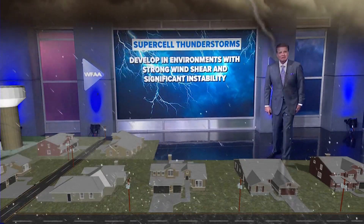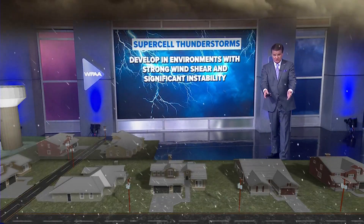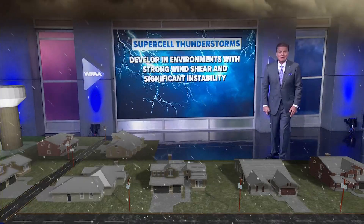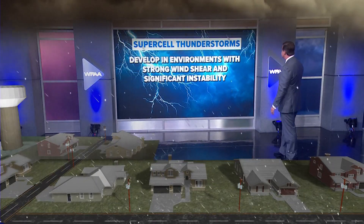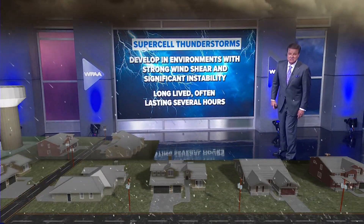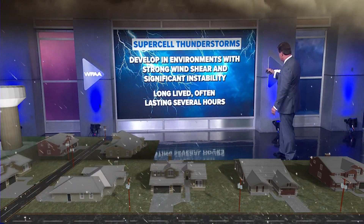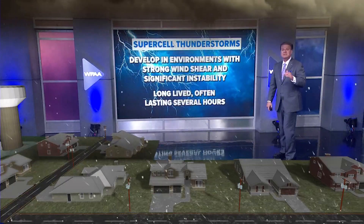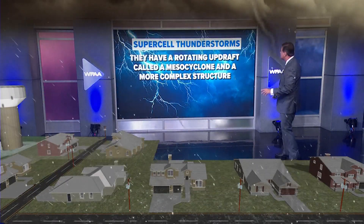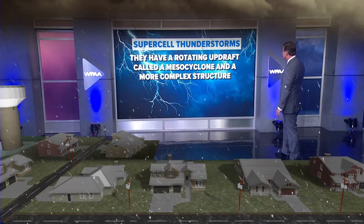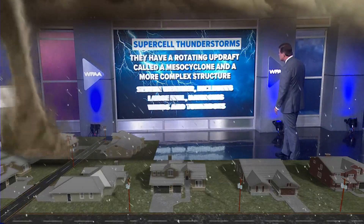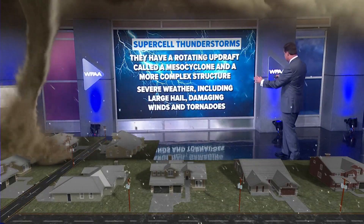When we talk about supercell thunderstorms, you can see what it's doing here in this neighborhood — look at the hail that's falling. Wait until you see the tornado in just a second. Supercells develop in environments with strong wind shear and significant instability. They last a long time — several hours or more. They can have a rotating updraft called a mesocyclone, and a more complex structure than air mass thunderstorms.